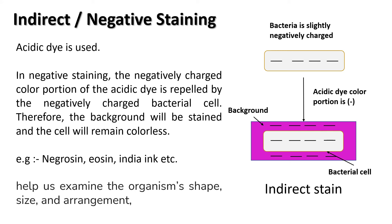Indirect or negative staining: In this method, an acidic dye is used, such as nigrosin, eosin, or India ink. The color portion of the acidic dye is negatively charged, and bacterial cytoplasm is also negatively charged. So when the acidic dye reacts with bacteria, its negative charge is repelled by the negative charge of the bacterial cell, and the result is the dye deposits around the bacterial cell, leaving the cell itself colorless. Since the organism is seen indirectly, this type of staining is called indirect or negative staining. This method is used to examine the organism's shape, size, and arrangement.